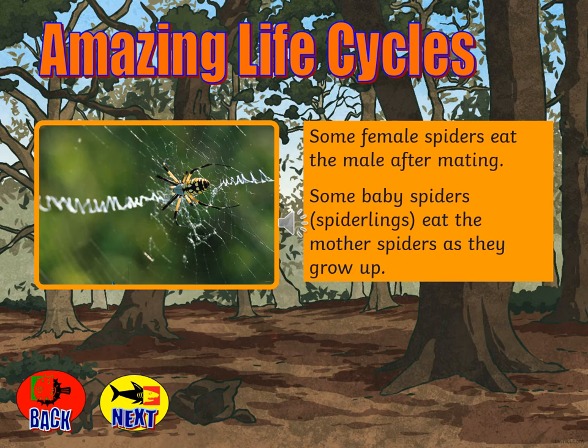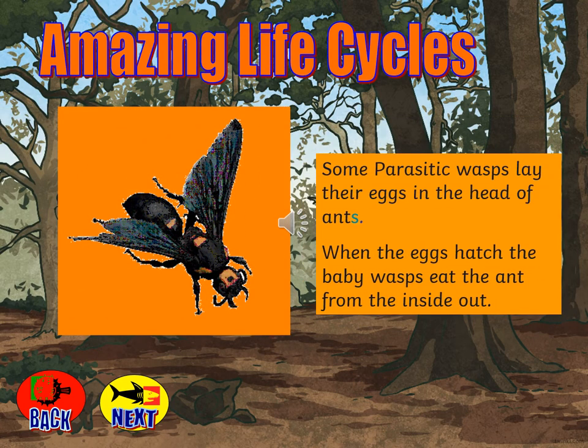A couple of slightly terrifying facts: often after mating with a male, female spiders eat the male. And some baby spiders, otherwise known as spiderlings, eat the mother spiders when they grow up. And this is an incredibly gory fact — some wasps lay their eggs in the head of ants, and then when the eggs hatch, the baby wasps eat the ant from the inside out. Can you imagine that?